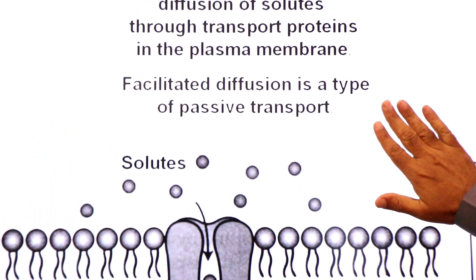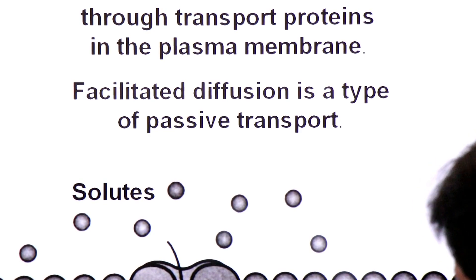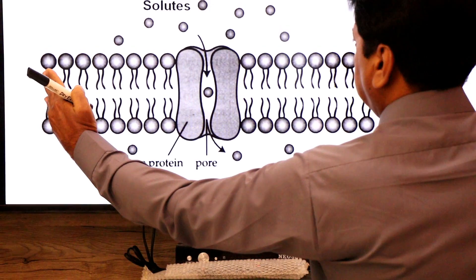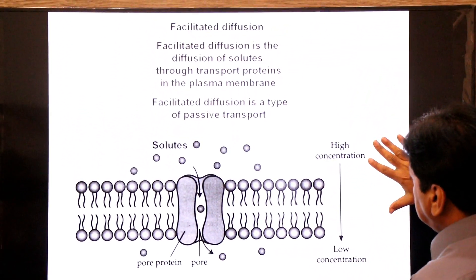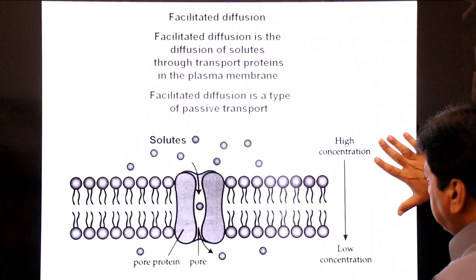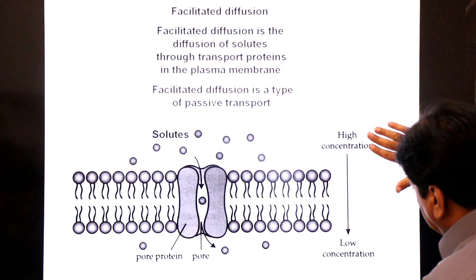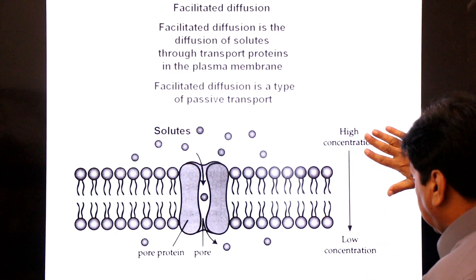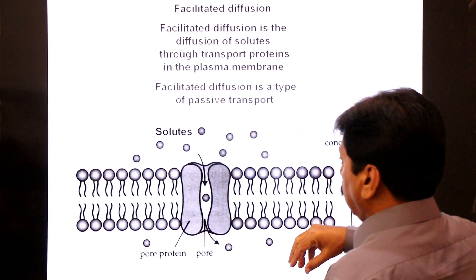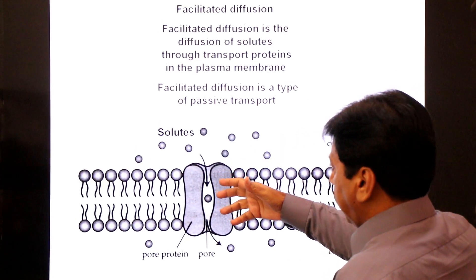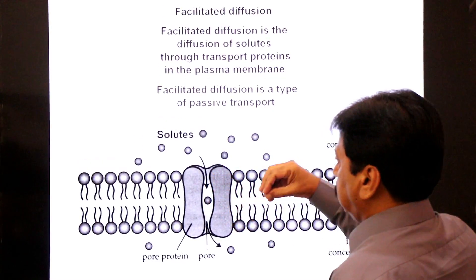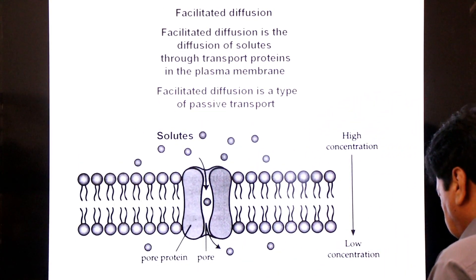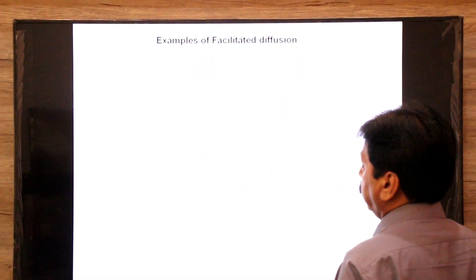Facilitated diffusion is a type of passive transport. Molecules move from higher concentration to lower concentration across the plasma membrane using channel proteins. Examples include glucose, sodium, potassium, and calcium ions.